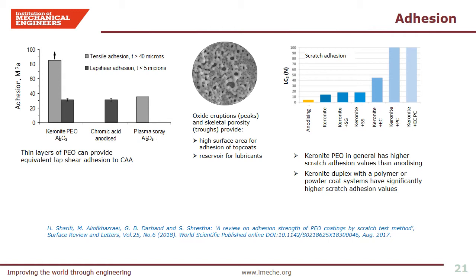Another important feature of the PEO coating is its adhesion. This slide shows measured tensile pull adhesion values of PEO aluminum oxide versus a chromic acid anodised layer. Thicker PEO coatings — typically greater than 40 microns — generally record tensile adhesion in excess of 80 MPa, which can be considered very high. Thinner PEO coatings, for example less than 5 microns used as pre-treatments, can have similar adhesion values to a chromic acid anodised layer, which had been until now widely used in industry. It is the oxide eruptions and skeletal porosity that provide high surface area for adhesion of top coats such as paints and also work as a reservoir for lubricants.